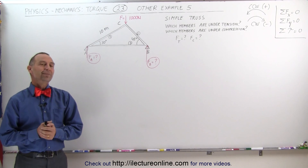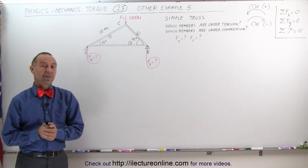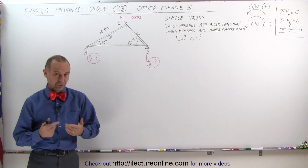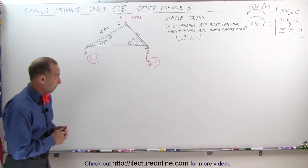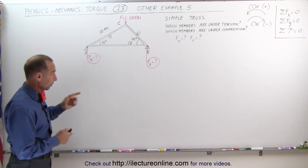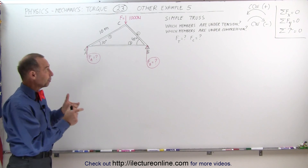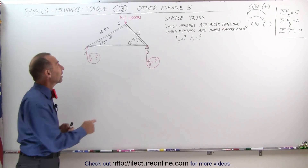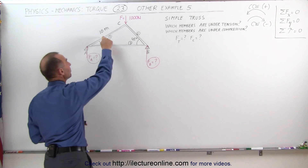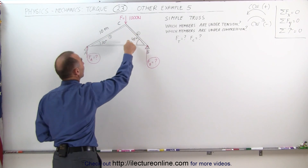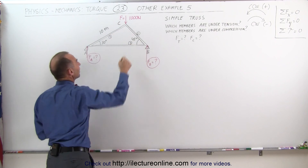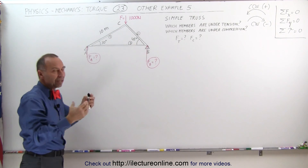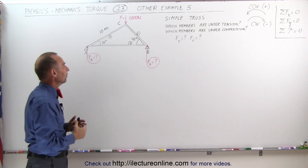Welcome to ElectronLine. Here we have an example of a simple truss for which we can use the concept of torque. A simple truss is a structure that has beams called members that are connected at the ends. In this case we have three beams — one, two, and three — connected at the ends so that they form a rigid structure together.